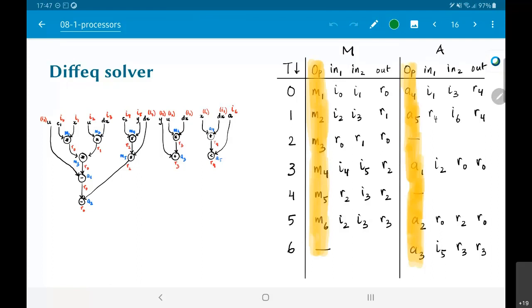Now, one thing you will notice is, strictly speaking, those columns marked op, where I have written M1, M2, M3, etcetera, I don't really need to specify that anywhere.